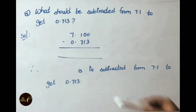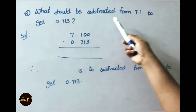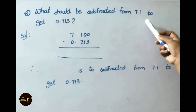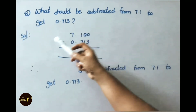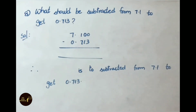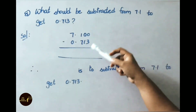See now question number 8. What should be subtracted from 7.1 to get 0.713? Let us see the solution now. The given decimals are unlike decimals. To make them like decimals, we add two zeros to 7.1, making it 7.100.